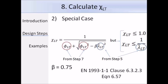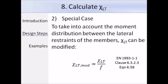For the special case, there is also a modified reduction factor chi LT,mod given by expression 6.58, which is chi LT divided by a factor f. Since f is always less than or equal to 1, chi LT,mod will always be equal to or greater than chi LT — so it's beneficial to use this expression as you can gain some additional resistance. The expression for f is given on the next slide.